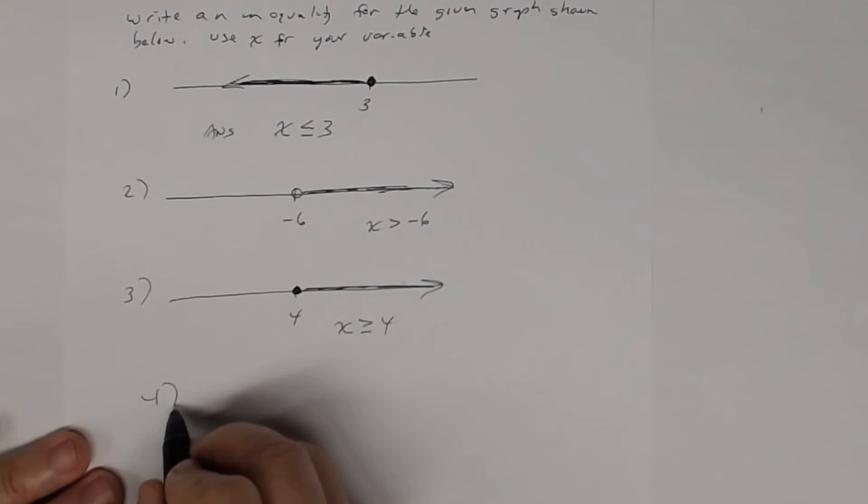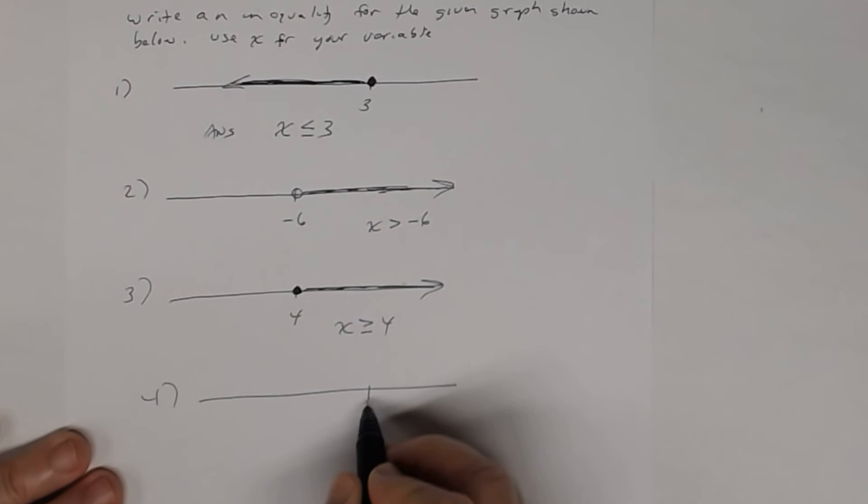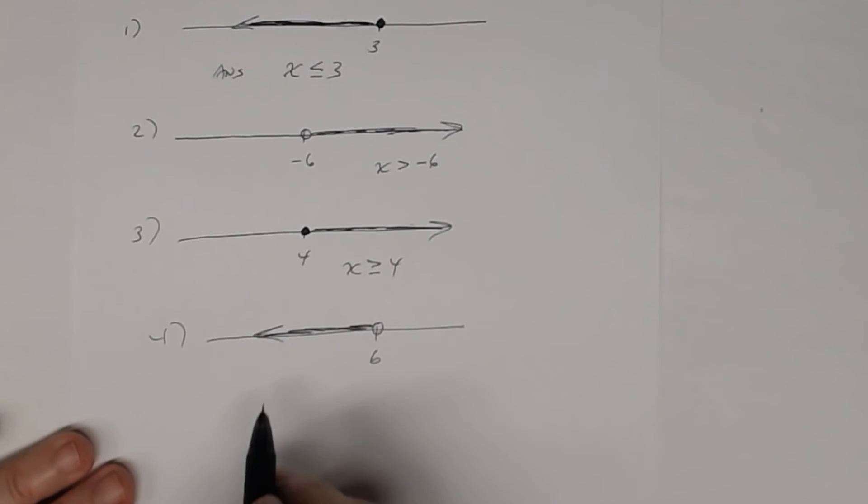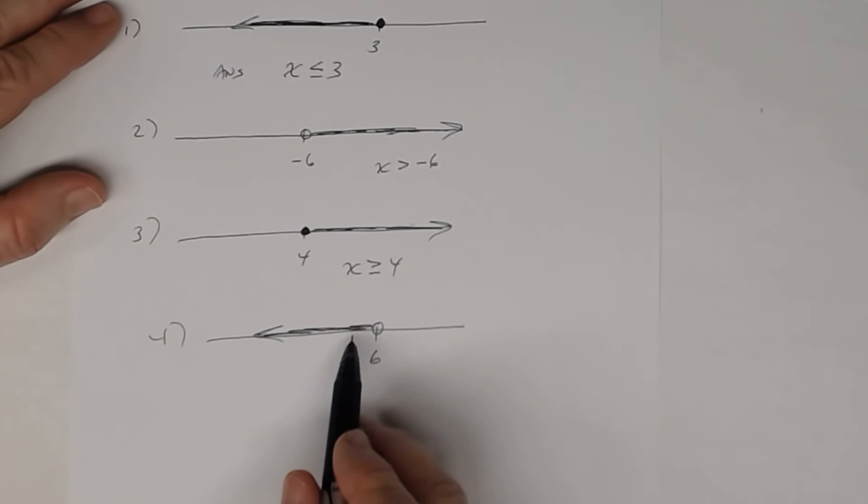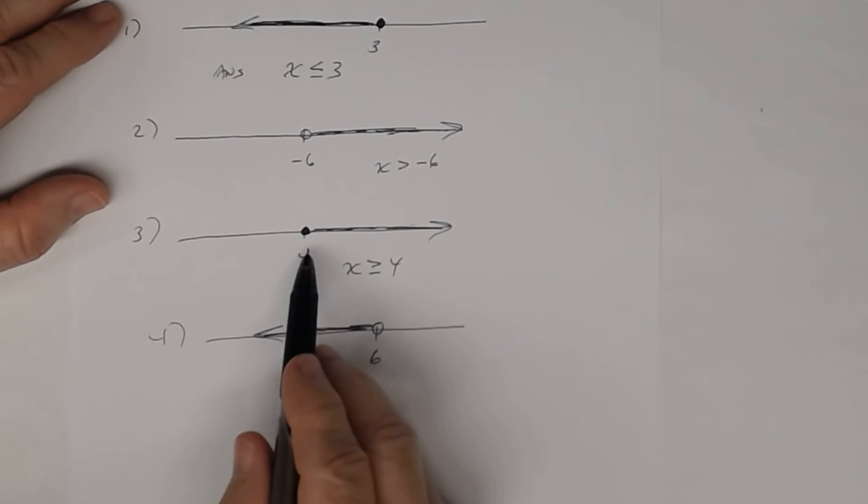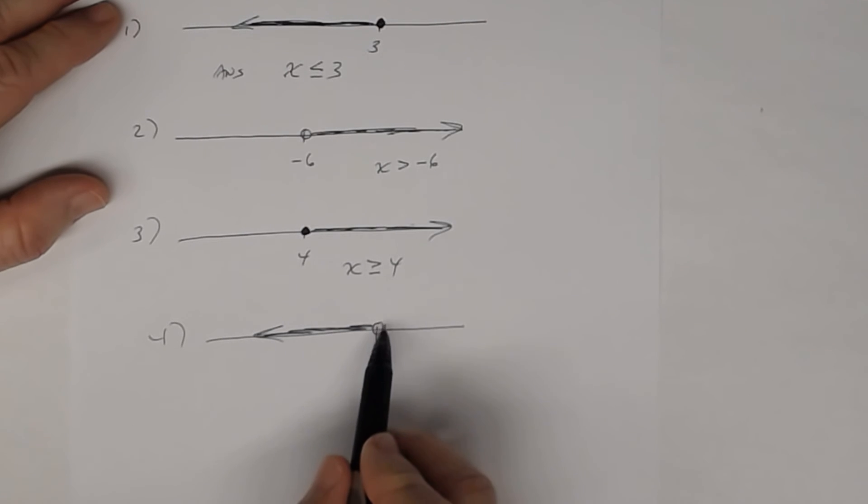And then number 4, if we had 6 with an open circle going to the left like this. Remember, open circle means that this number is not included. This hollow dot, they sometimes call it a hollow dot versus a solid dot. So the way you're going to write the inequality is x is strictly less than 6.